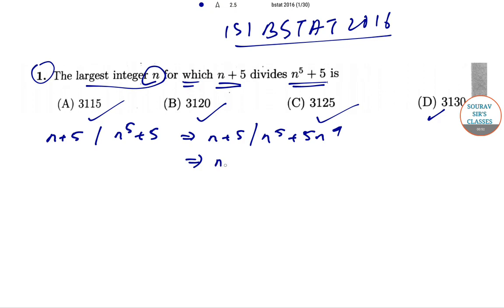This implies that n+5 will also divide 5n^4-5, since n+5 divides 5n^4+25n^3.